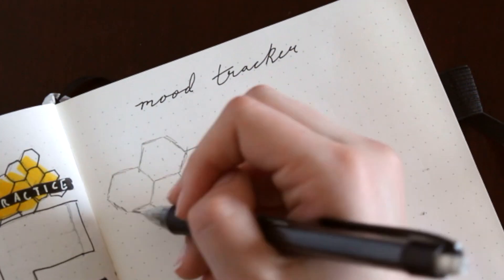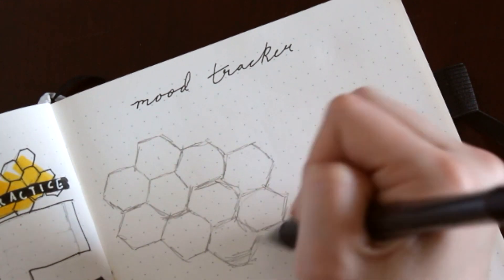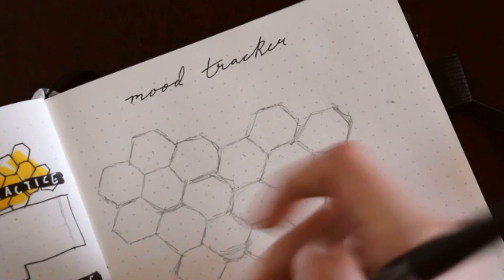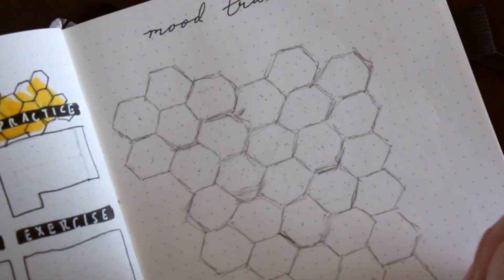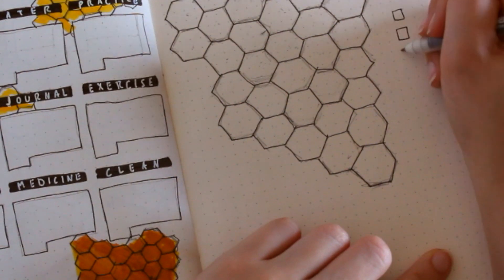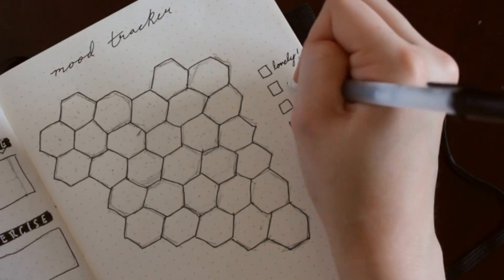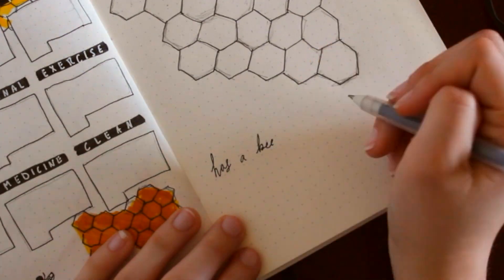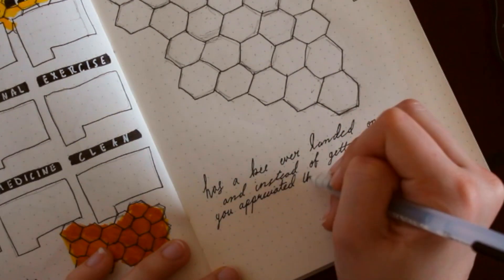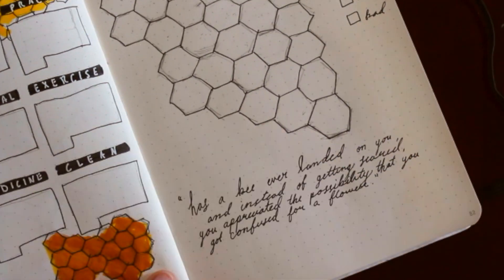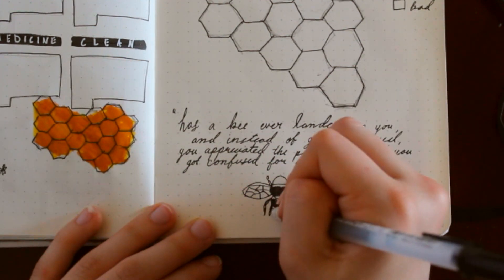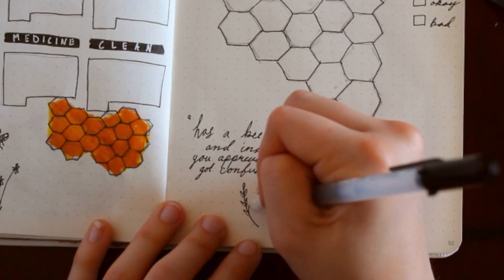Now onto my mood tracker, I'm drawing just bigger honeycombs for each day of the month, and then I'm going to go over it with my gel pen and put a little key on the side. And then I'm going to add a quote to the bottom that says, has a bee ever landed on you? And instead of getting scared, you appreciated the possibility that you got confused for a flower. And then I'm going to do a little bee doodle with some flowers on the side, because I thought that was a cute way to get some positive energy up in here.